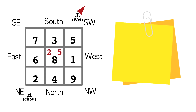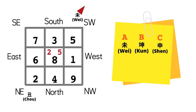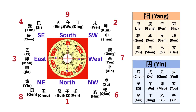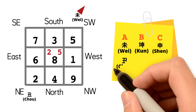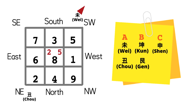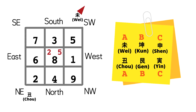We write them down on a piece of paper and label them A, B, and C respectively in a clockwise direction. As this chart is sitting Chou, Chou is in the northeast. In the northeast, there are three sub-directions — that's Chou, Gen, and Yin. We then write down these three mountains below Wei, Kun, and Shen, and also label them A, B, and C respectively in a clockwise direction.